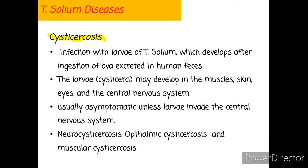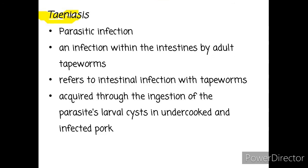Usually, cysticercosis is asymptomatic unless the larvae invade the central nervous system. There are types of cysticercosis: neurocysticercosis, ophthalmic cysticercosis, and muscular cysticercosis.